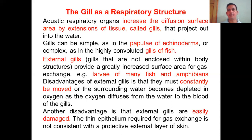Those organisms must either move themselves or move their gills so that the water forming a layer on the gills is replenished at all times. This maintains a difference in partial pressure so oxygen can diffuse from water to blood. Another disadvantage is that external gills can be easily damaged — the thin epithelium required for gas exchange is not consistent with the protective external layer of skin. If a thick layer were present on the gills it would hinder gas exchange, so gills usually have very thin epithelium, which can be damaged by strong currents or contact with other organisms or materials.